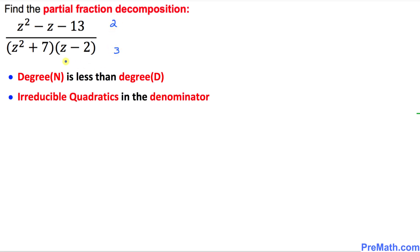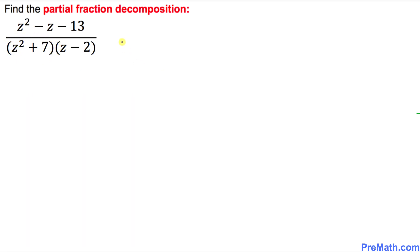And one more thing: the quadratic in the denominator, this part, is indeed irreducible — it cannot be factored out. So now we are going to get started with the partial fraction decomposition.